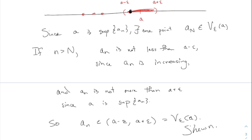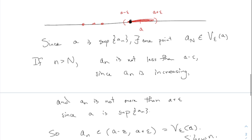That's using the old theorem about the sup: since A is the sup, pushing just to the left by ε means there is a point in between — a point that you pass over. That was a theorem in the notes; we used it on the homework. This is the end of that proof. We did it for increasing; the same thing works for decreasing — just use the inf and state all the inequalities the other way around.